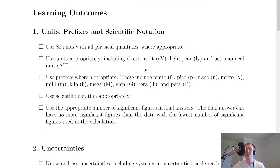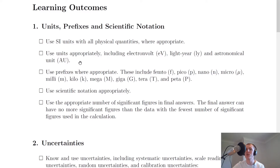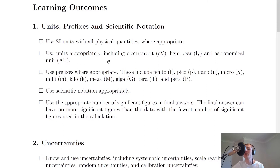So, units, prefixes and scientific notation. You need to be able to use SI units with all physical quantities where appropriate. SI units are just like seconds for time, metres for distances, and kilograms for masses, and so on. You also need to use units appropriately, including electron volt, light year and astronomical unit. Light years and astronomical units might be a recap from third year, but electron volts are new and will be covered in later topics.